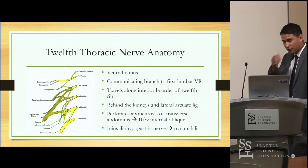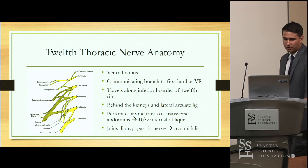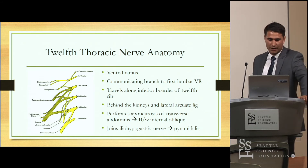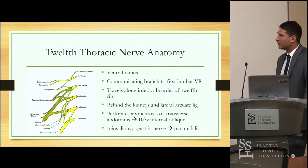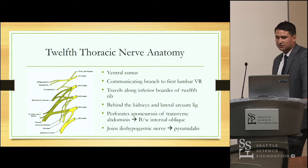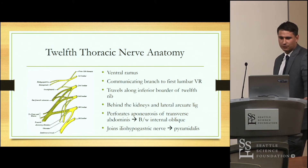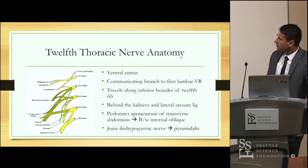A little about the anatomy of the 12th nerve, which explains why the pain can be found in so many different locations. The 12th nerve has one of the largest ventral rami, and it actually gives a communicating branch to the first lumbar ventral rami. It then travels along the inferior part of the 12th rib, goes behind the kidneys and the lateral arcuate ligament, before perforating the aponeurosis of the transversus abdominis and passing between the internal oblique. Here you can see a schematic of the 12th thoracic nerve with the first lumbar and a branch off to the iliohypogastric.